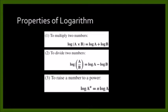First, we have the multiplication of two numbers. To multiply two numbers: log(a times b) is equal to log a plus log b. This is sometimes called the multiplicative property of logarithm. Next, to divide two numbers: log(a over b) is equal to log a minus log b. This is sometimes called the quotient property of logarithm.